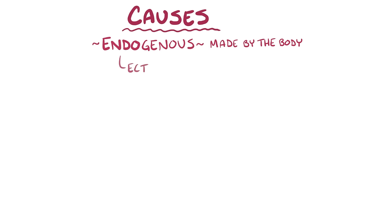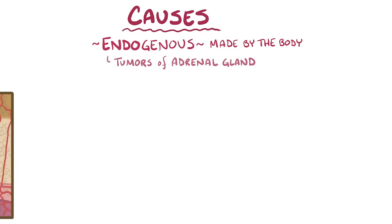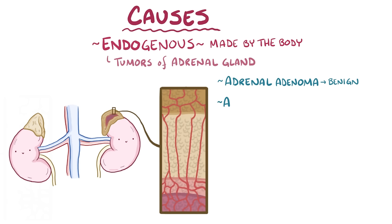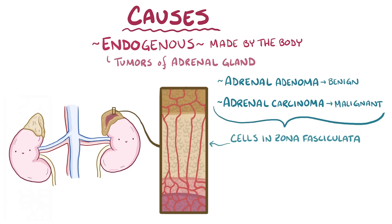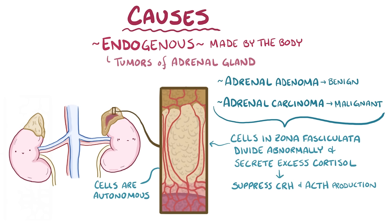Apart from pituitary adenomas, there are ectopic sources of ACTH, like small cell lung cancer, where the excess ACTH is coming from somewhere other than the pituitary. Another common cause of endogenous Cushing syndrome is tumors of the adrenal glands that make excess cortisol, like adrenal adenomas, which are benign tumors, and adrenal carcinomas, which are malignant tumors. In both cases, cells of the zona fasciculata start dividing abnormally and secrete excess cortisol. The excess cortisol provides negative feedback to the hypothalamus and pituitary, suppressing CRH and ACTH production. Although this doesn't affect the involved adrenal gland—since the neoplastic cells are autonomous—the zona fasciculata of the uninvolved normal adrenal gland shrinks. The net result is still abnormally high cortisol levels, causing Cushing syndrome to develop.